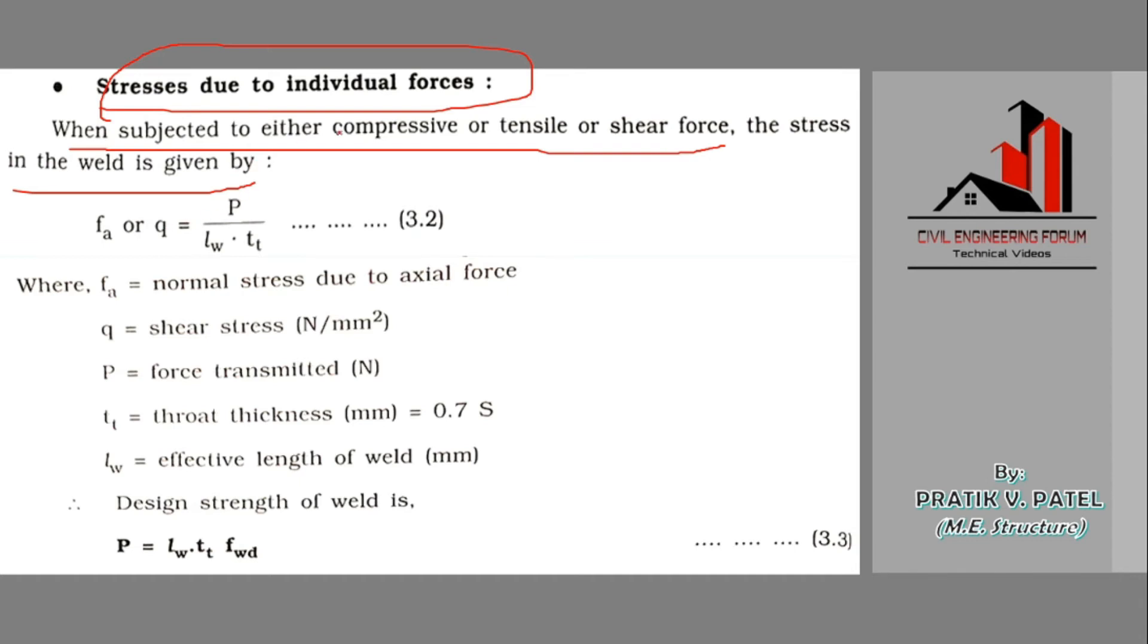The stress in the weld is given by this. We already know that if any external force is acting, then its value should be mentioned in the formula, that is capital P as the force transmitted in newton. So fa or q, that is normal stress due to axial force or shear stress, both of these would be having the same formula.